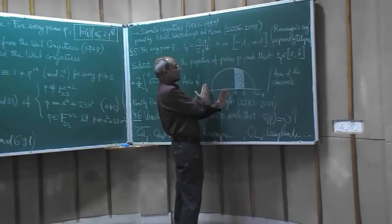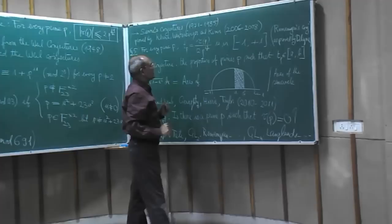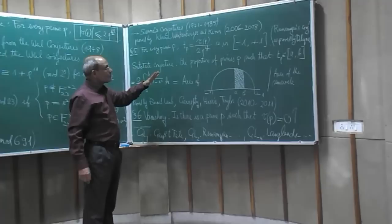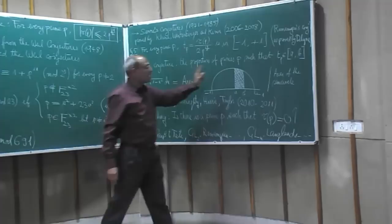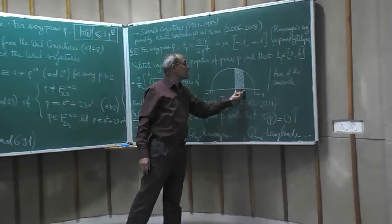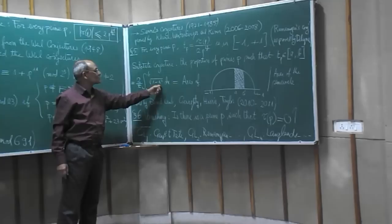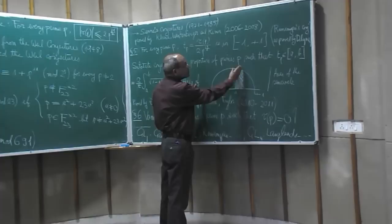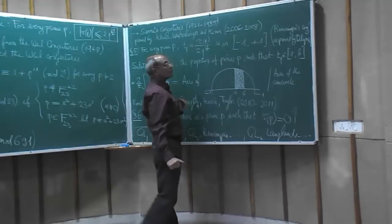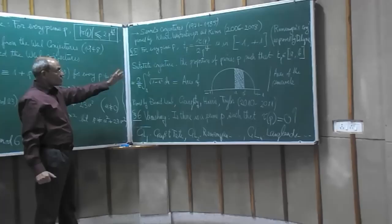Are they all more on the positive side and less on the negative side or in what way are they actually distributed? So in the 60s Sato and Tate studied similar questions and their conjecture was that the proportion of primes p such that Tp is in a given interval a, b is equal to this. This is 2 over pi, the integral from a to b of the square root of 1 minus x squared dx and geometrically it's just the area of this portion of the semicircle divided by the area of the whole semicircle.